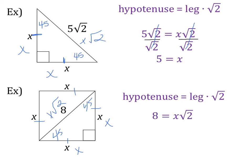So when I plug in, 8 equals x root 2. So we have to divide both sides by the square root of 2 to get x by itself.